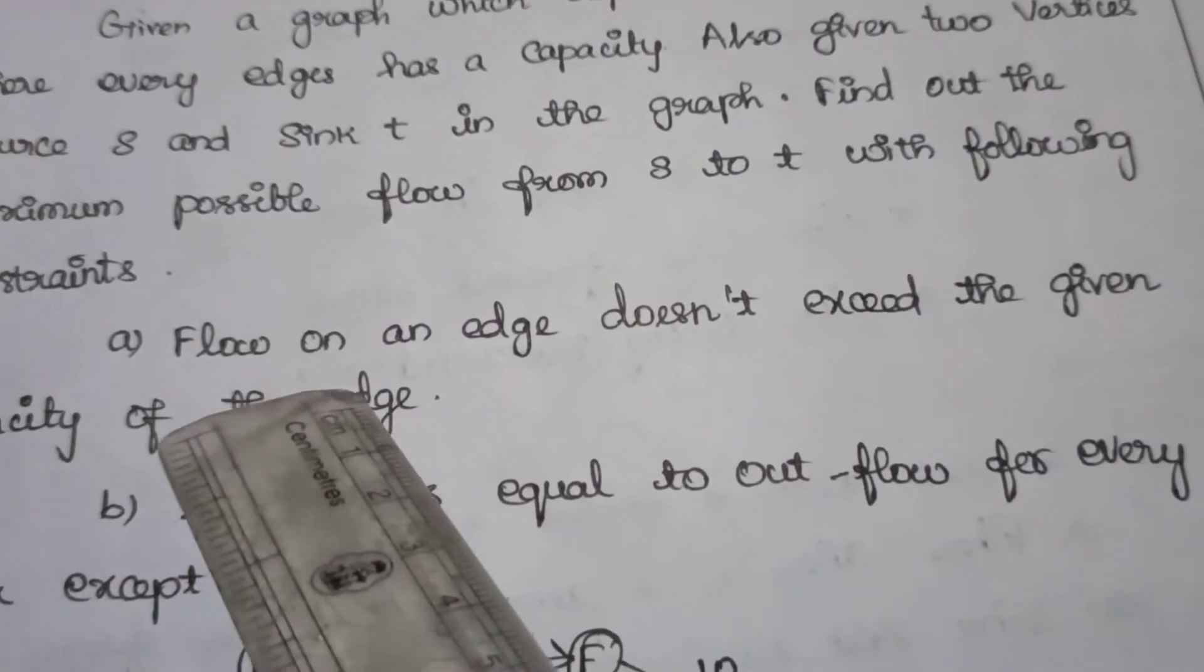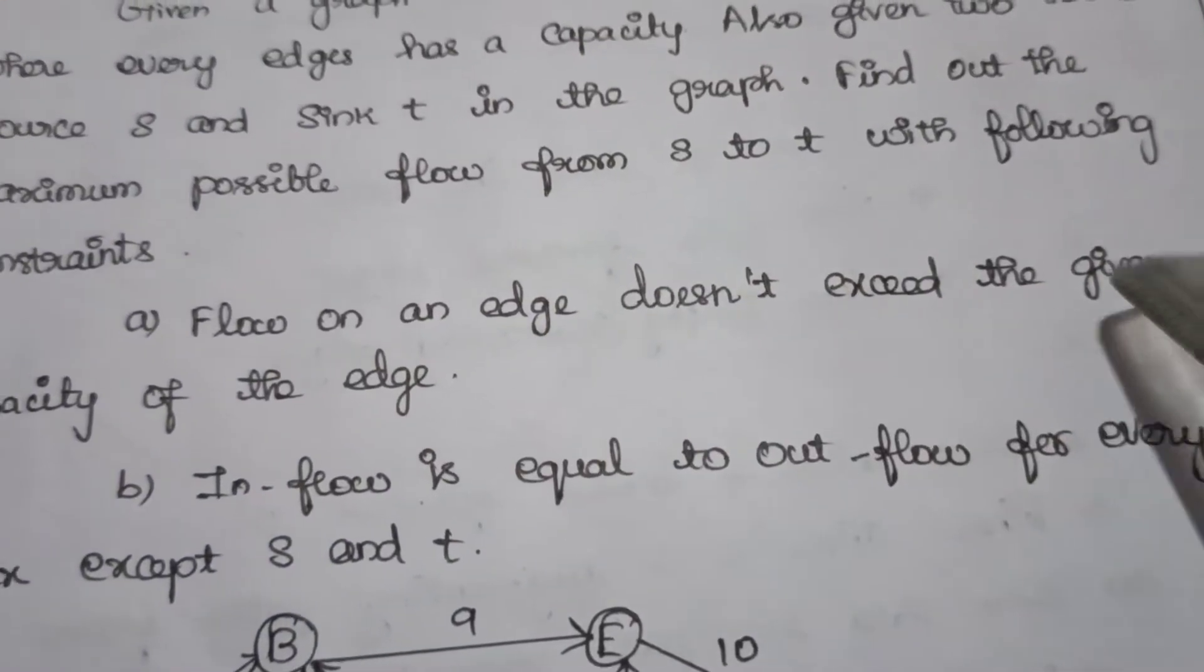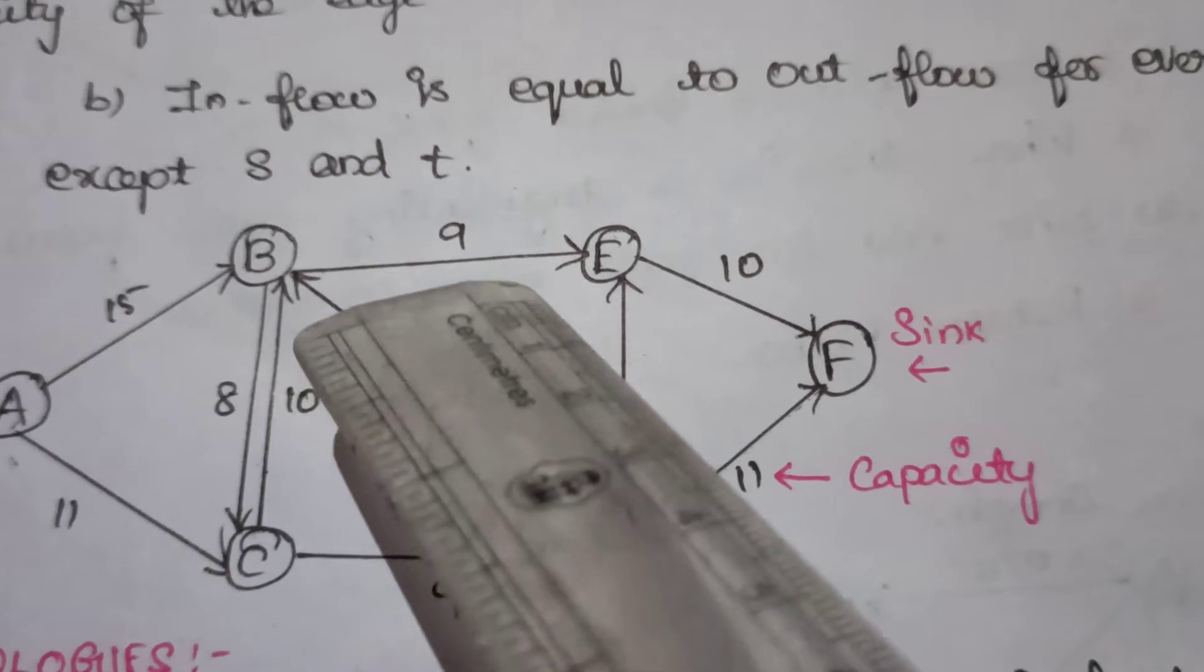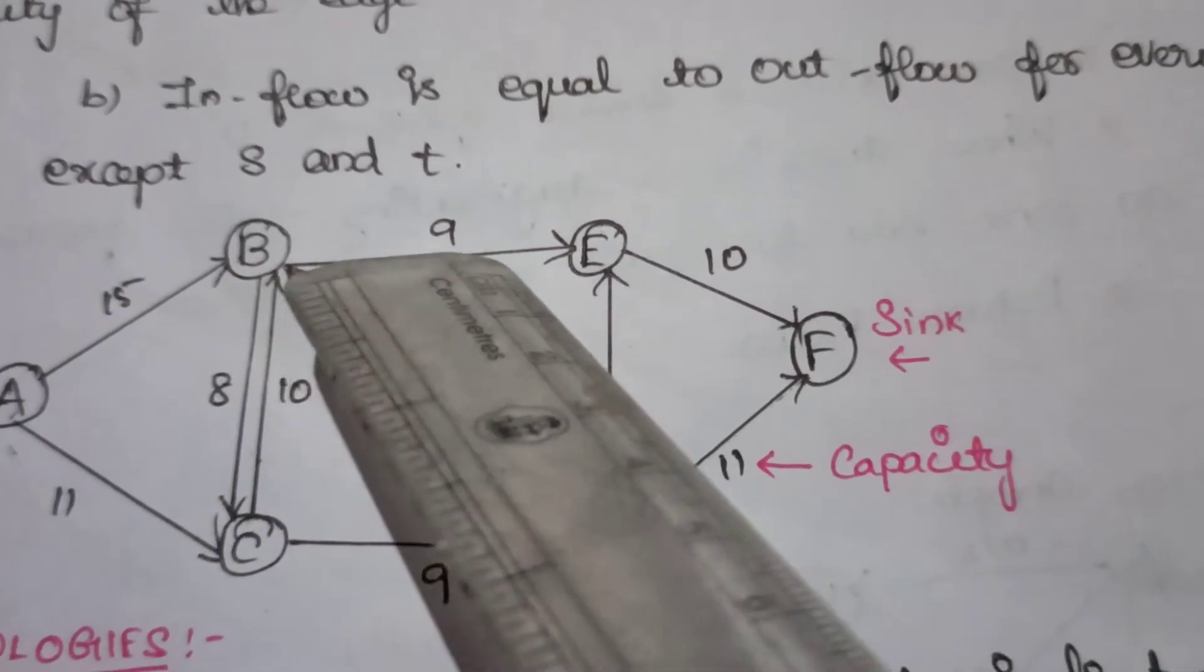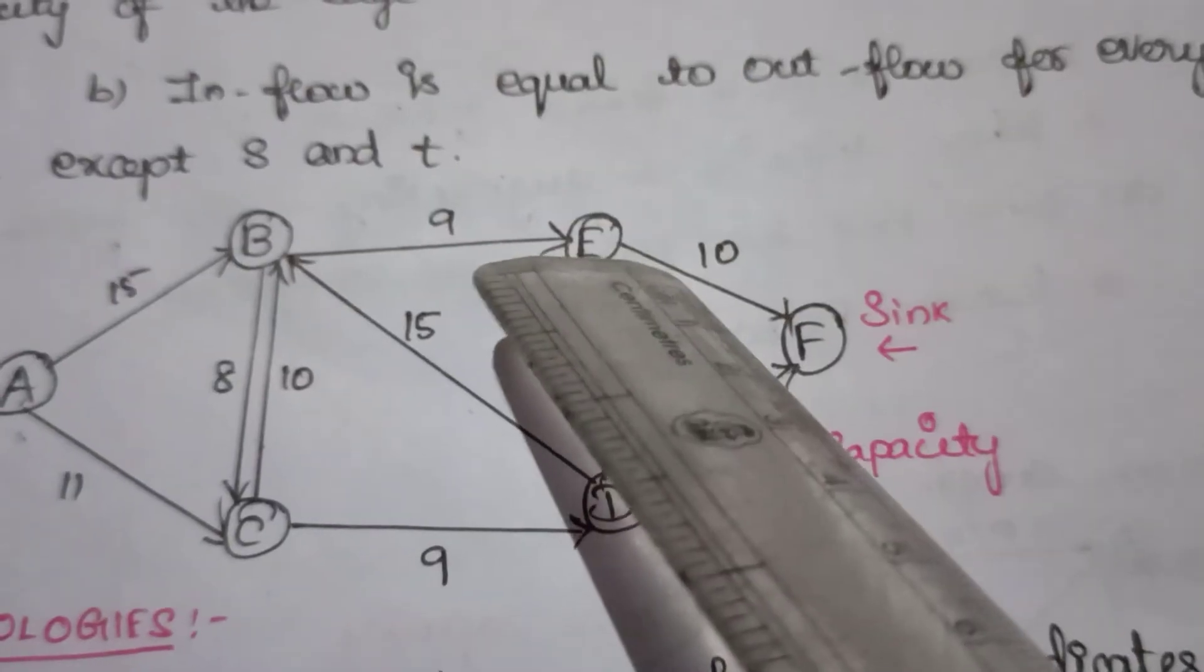Here, look at constraint number one: flow on an edge does not exceed the given capacity of the edge, which means the flow of each edge should not exceed the given capacity.